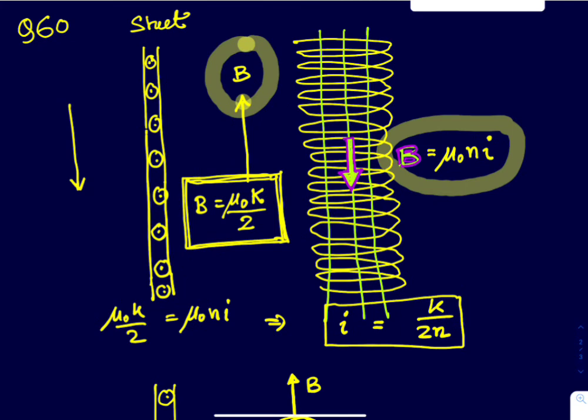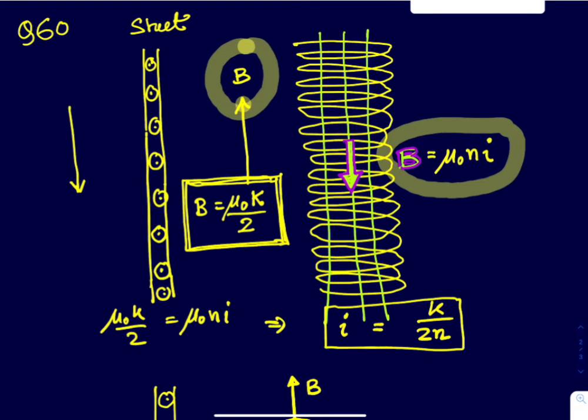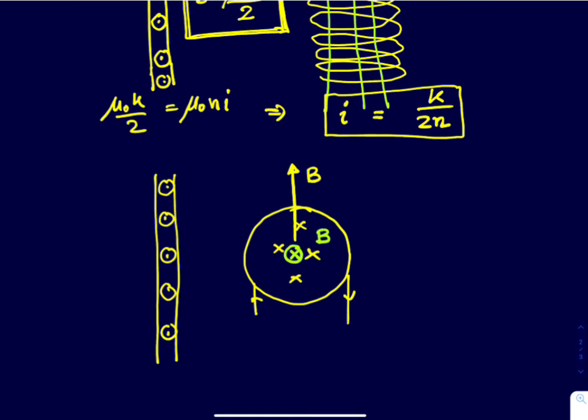Now, in the next case, it is asked if the solenoid is rotated to make the axis perpendicular to the metal sheet, what will be the magnitude of the magnetic field near its center? Then, obviously, the magnetic field due to the sheet is this B while the magnetic field due to the solenoid is this B. So the resultant magnetic field is root over 2B. That is root over of 2 into mu0Ni.